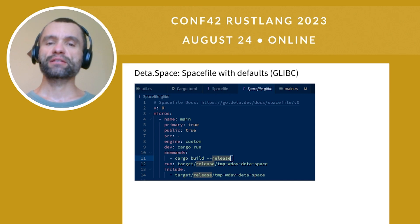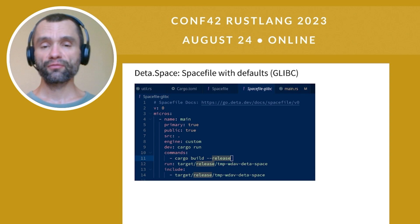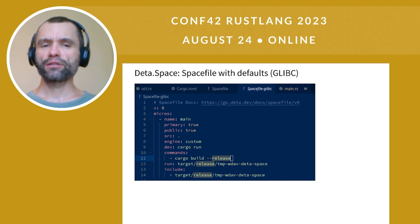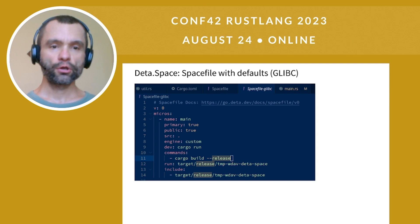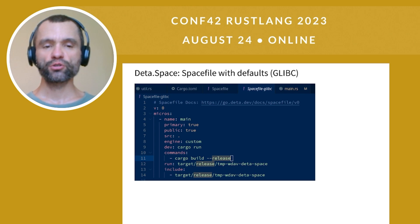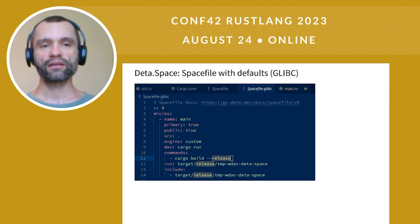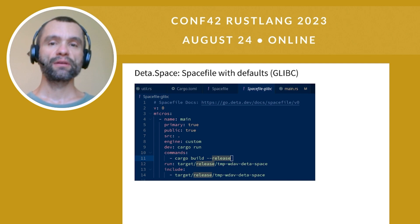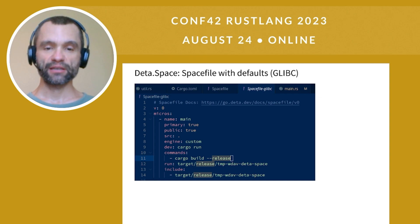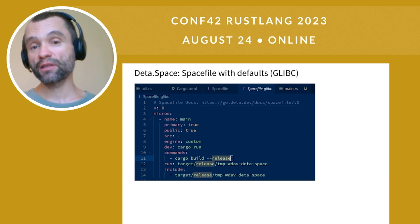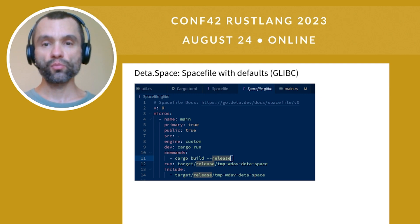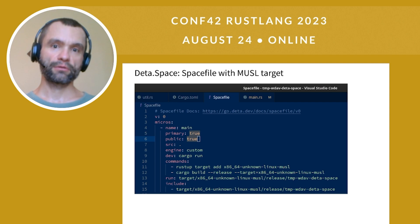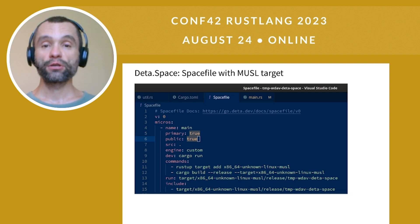Deta.Space uses a spacefile, which is a YAML file with simple entries. It's very well documented, and if all you need is defaults or you don't need any private routing or special features, it's very easy. However, Rust support is quite new at Deta.Space, and occasionally Rust applications don't work if you build them with a standard target that uses glibc. Because of that, I suggest that in the interim you use the MUSL target, which is a lightweight Linux statically compiled target that doesn't use glibc at all.